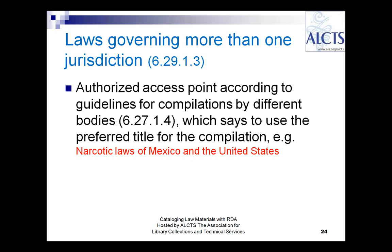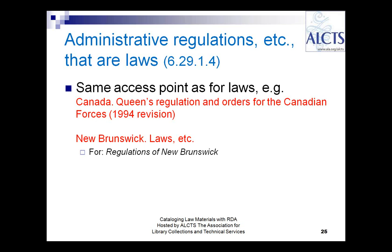Laws governing more than one jurisdiction are treated according to a general rule for compilations, using the preferred title for the compilation — for example, narcotic laws of Mexico and the United States. In certain countries, administrative regulations are considered to be laws, such as in the United Kingdom and Canada. In that case, we follow the same rules for access points as we do for laws — for example, entering the Queen's Regulations and Orders for the Canadian Forces under the jurisdiction Canada, or using the preferred title 'laws, etc.' for a general compilation of all regulations of New Brunswick.